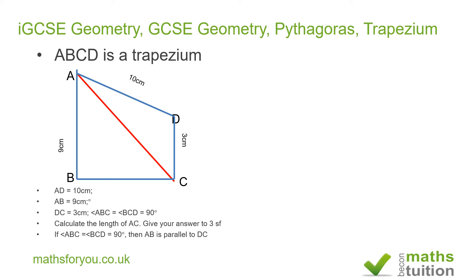To find the length BC we need to do some construction work. We draw a line from D parallel to BC, and this line cuts the line AB at E. So it's the line DE there.